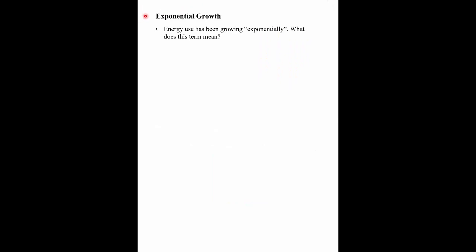People use the term exponential growth all the time. It turns out that energy use has been growing exponentially over the past 100 to 150 years. What does that term mean? Well, it turns out that a bank balance — simple compound interest — is an example of exponential growth. This is something you've probably all had some experience with.